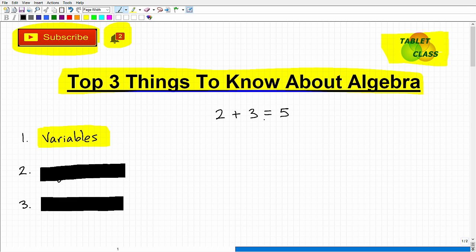So in algebra, what we do is we use variables. For example, instead of two plus three equals five, we might have two plus x is equal to five. So the main idea of a variable in algebra is that it is a placeholder for a number.